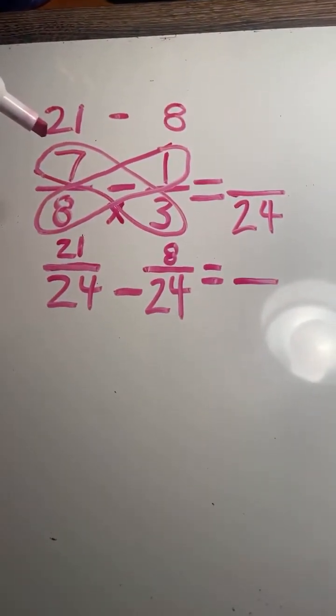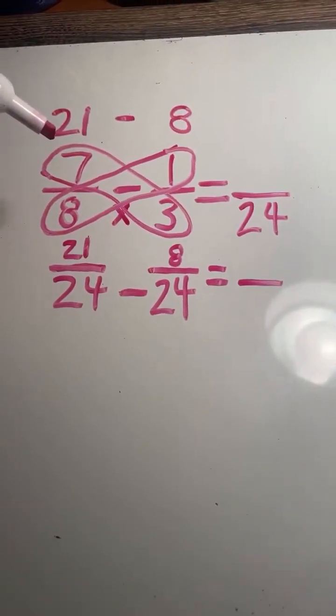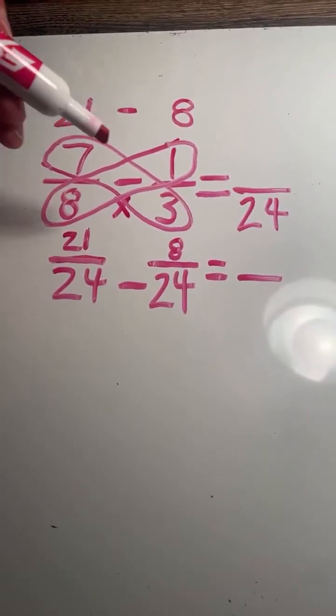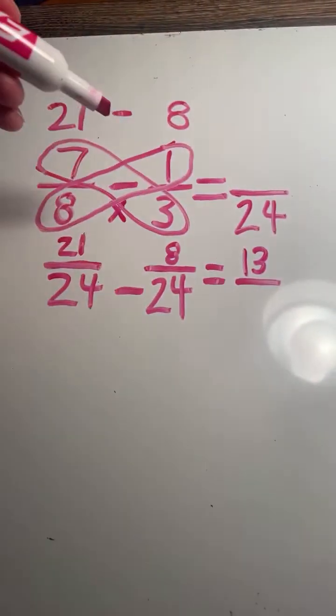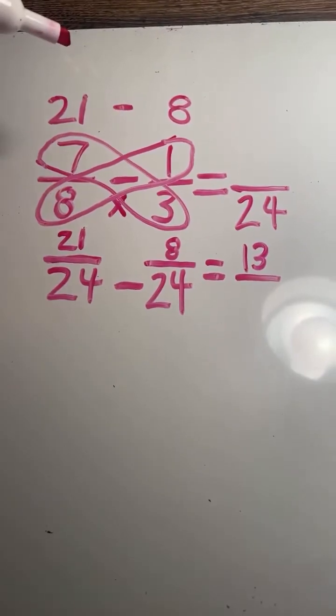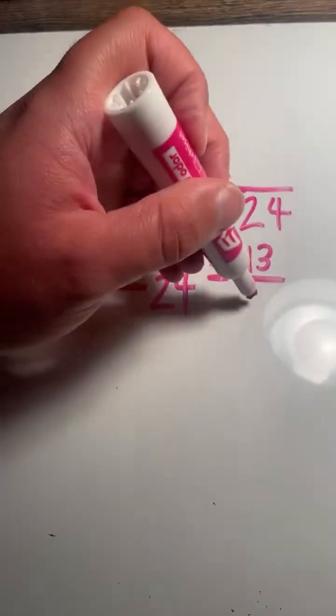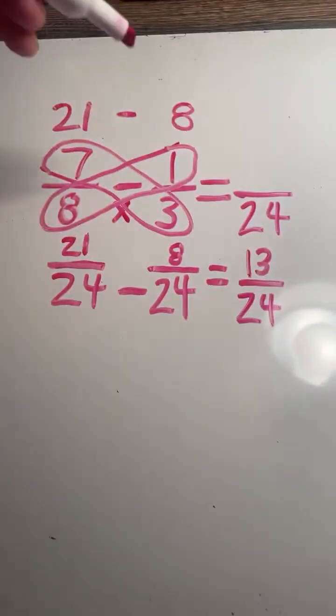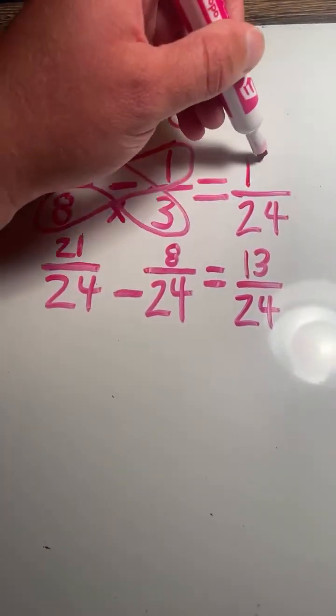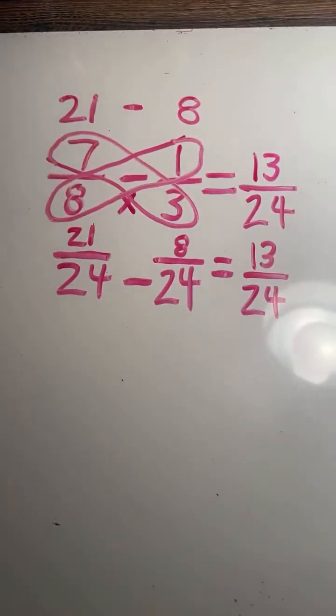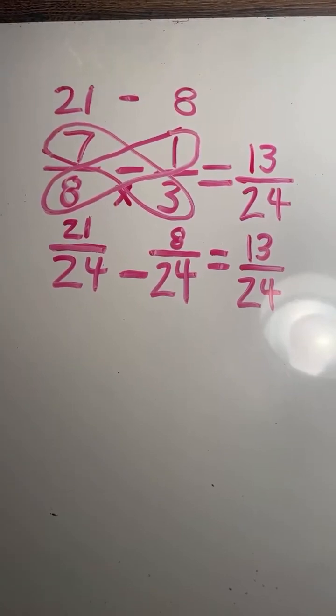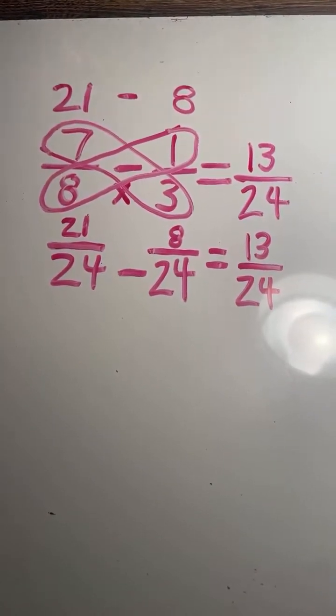Now we are ready to subtract our numerators. 21 minus 8 equals 13. Now that we have a common denominator, it will stay the same. We have our final answer, 7 eighths minus 1 third equals 13 24ths.